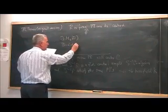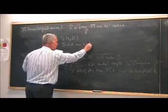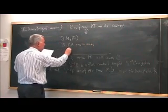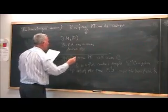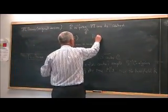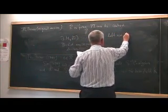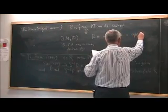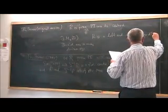So d is a division algebra, finitely dimensional over its center, with the property that r is a left and a right order of M_n(d).